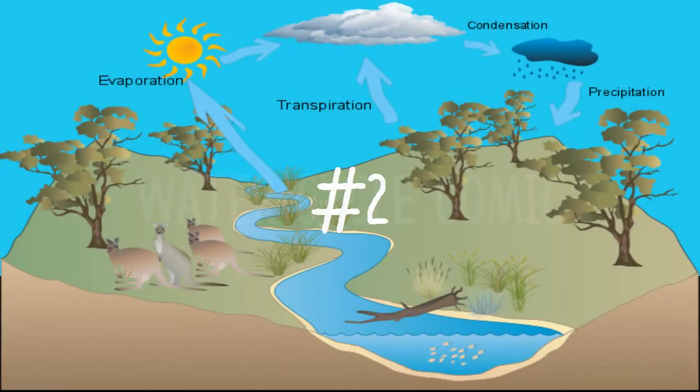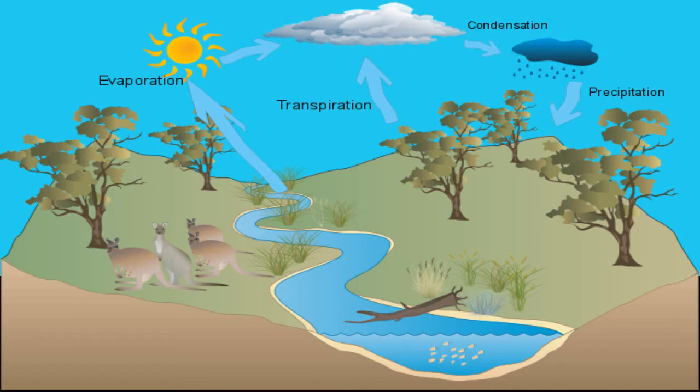Number 2. The water cycle is a cycle of processes in which water circulates between the Earth's oceans, atmosphere, and land. There are four main processes in the water cycle. Evaporation is the process of water droplets turning into vapor. Transpiration is like evaporation except it comes from plants. Condensation is the process of water vapor turning into water droplets, which creates clouds. Precipitation is any form of water that falls to the ground from clouds, such as rain, snow, sleet, or hail.